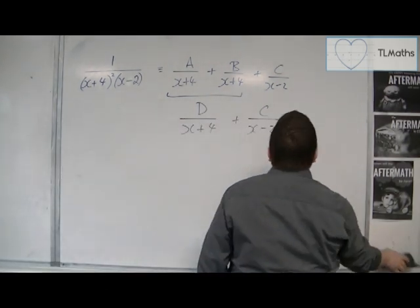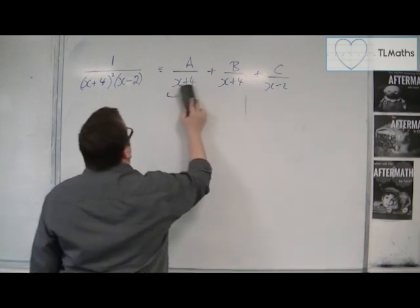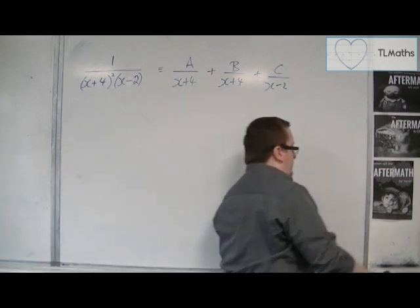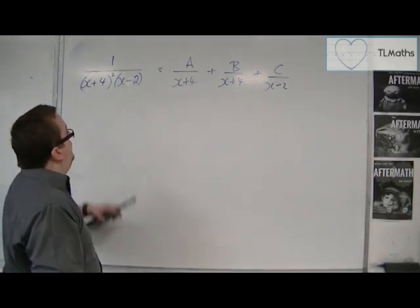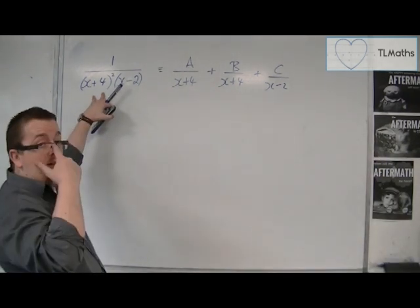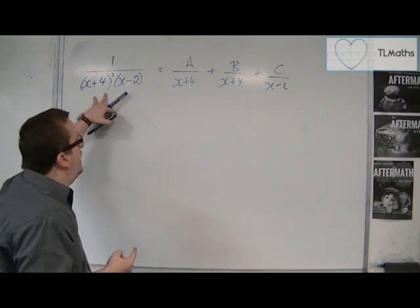So how do we get around this problem? Well, the way to do it, and the way to get around it, is that if you've got a squared like that on the denominator, so you've got a bracket squared,